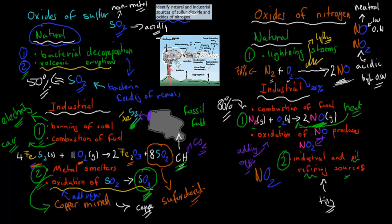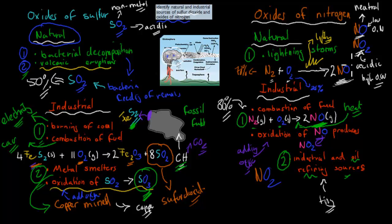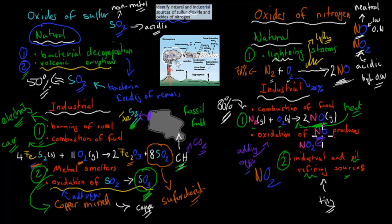To quickly recap: for natural and industrial sources of sulfur dioxide — natural sources were bacterial decomposition and volcanic eruptions; industrial sources were the burning of coal and combustion of fuel, and using metal smelters. For natural and industrial sources of oxides of nitrogen — we had nitrogen monoxide and nitrogen dioxide. Natural sources of nitrogen monoxide were lightning storms. Industrial sources were the combustion of fuel at 86%, and a small remaining amount from oil refining processes. Nitrogen dioxide is produced by the oxidation of NO to NO2, which occurs in the air after nitrogen monoxide is produced — and nitrogen dioxide is acidic.